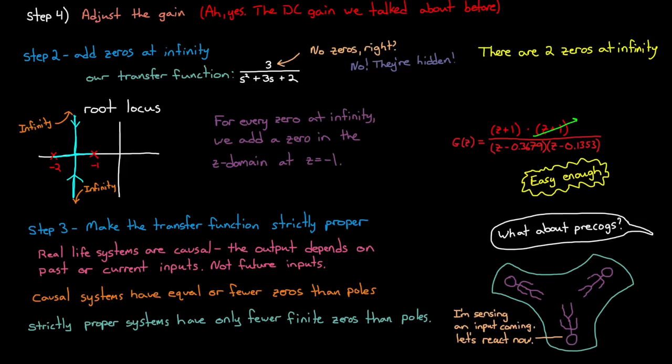Therefore, we remove any z equals minus one zeros until the system is strictly proper. Alternatively, we could have only added the zeros at infinity in step two until the order of the numerator was one less than the order of the denominator and combine those two steps into one. But either way would get us to the same spot, which is a strictly proper transfer function in the z-domain.